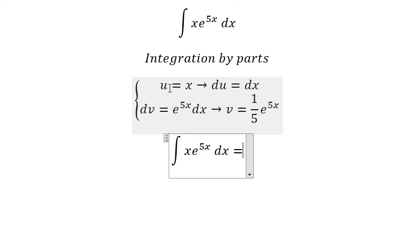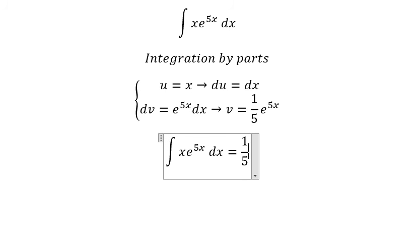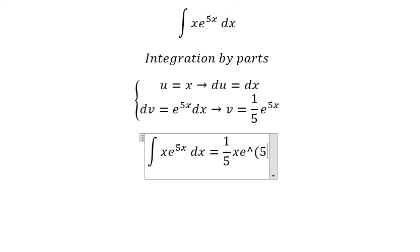So we have u multiplied by v, which gives us 1 over 5 times x times e to the power of 5x.